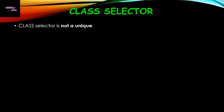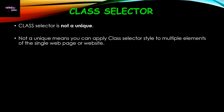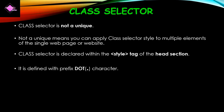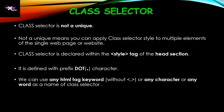The class selector is not unique — that means you can apply class selectors to multiple elements of a single web page or across your whole website. This class selector is declared within the head section using the style tag, and while declaring it we need to use a dot as a prefix. The keyword used for the class selector may be any HTML tag keyword without angle brackets, or any other character or name.